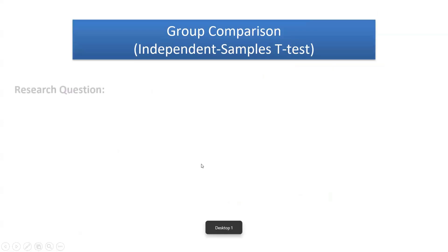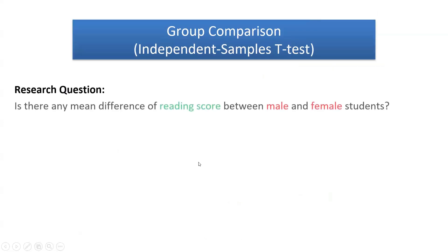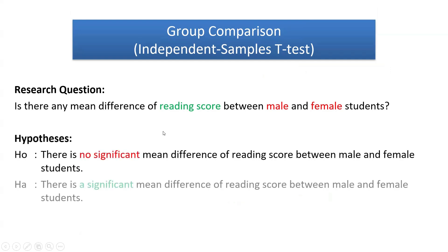These are the research questions: Is there any mean difference in reading score between male and female students? We can make two hypotheses. The null hypothesis (H0): there is no significant mean difference in reading score between male and female students. The alternative hypothesis (HA): there is a significant mean difference in reading score between male and female students.